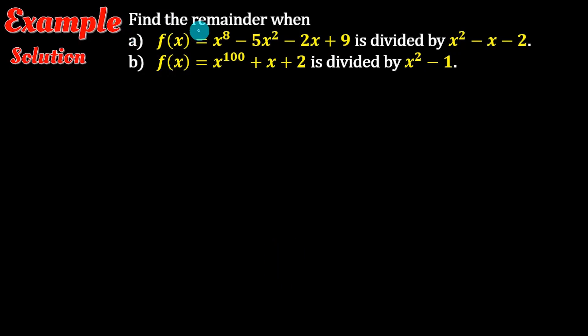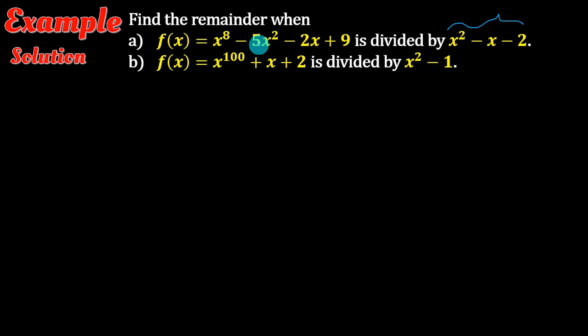Find the remainder when f of x equals x to the power of 8 minus 5x squared minus 2x plus 9 is divided by x squared minus x minus 2.